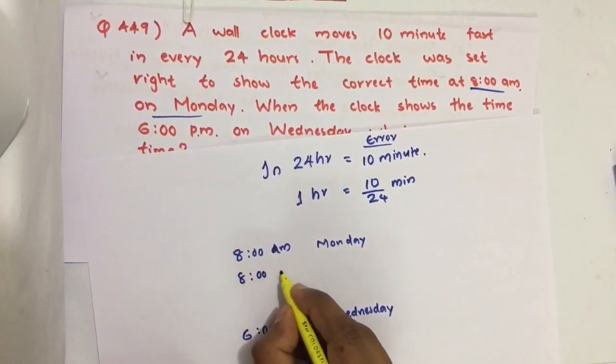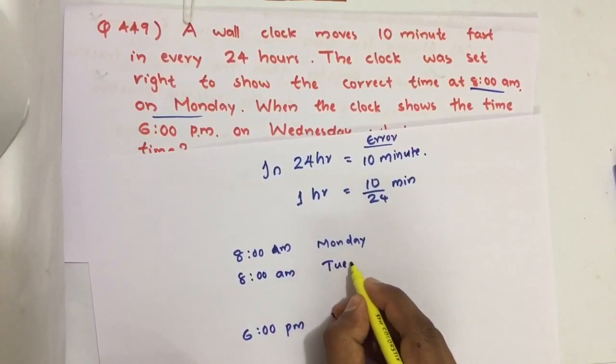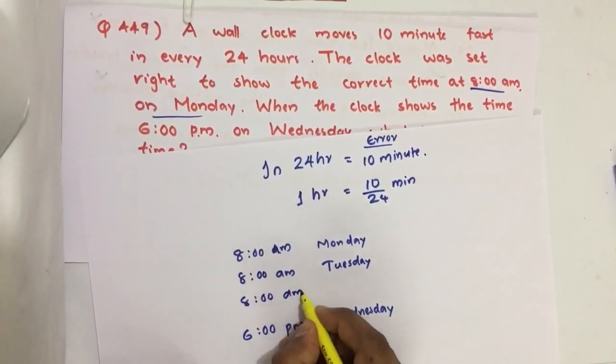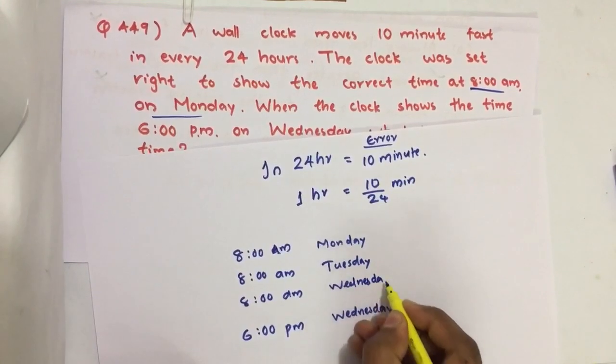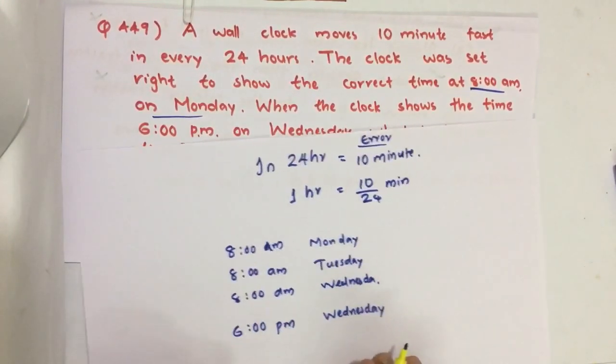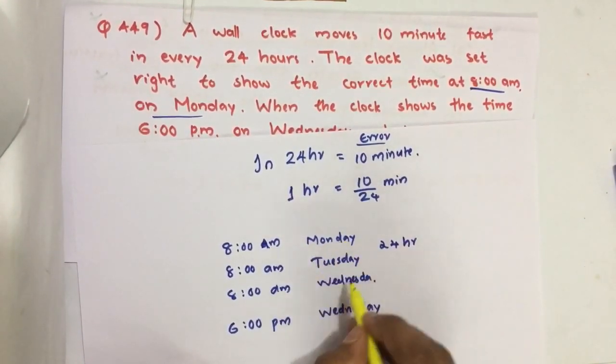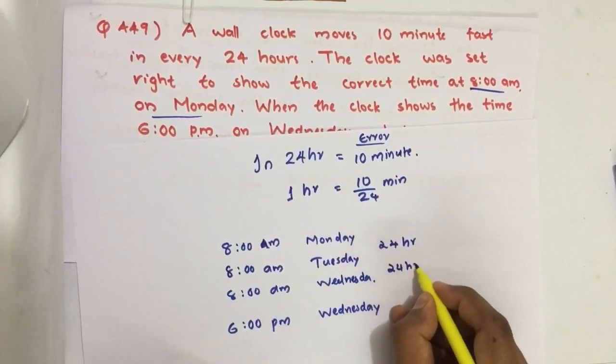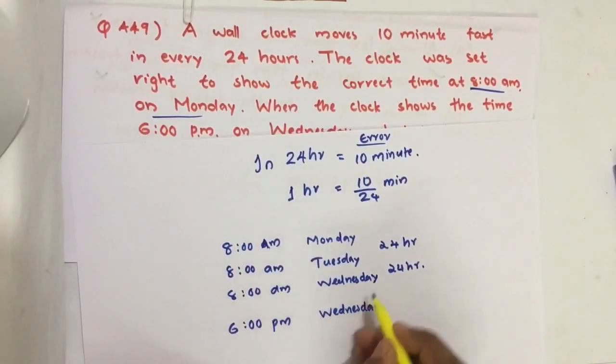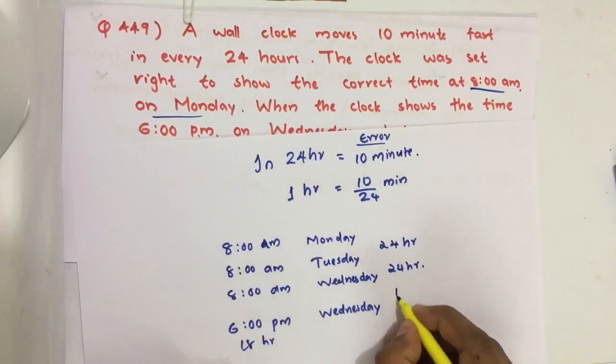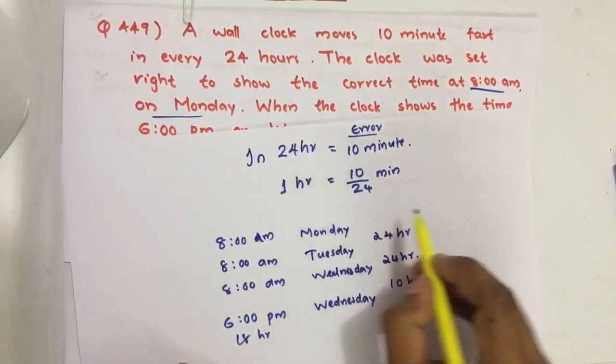8 a.m. Tuesday, next day 8 a.m. Tuesday. Next after one day it is 8 a.m. Wednesday, then 6 p.m. Wednesday. 6 p.m. Wednesday we can write as 18 hour, then 18 minus 8, it is 10 hours.